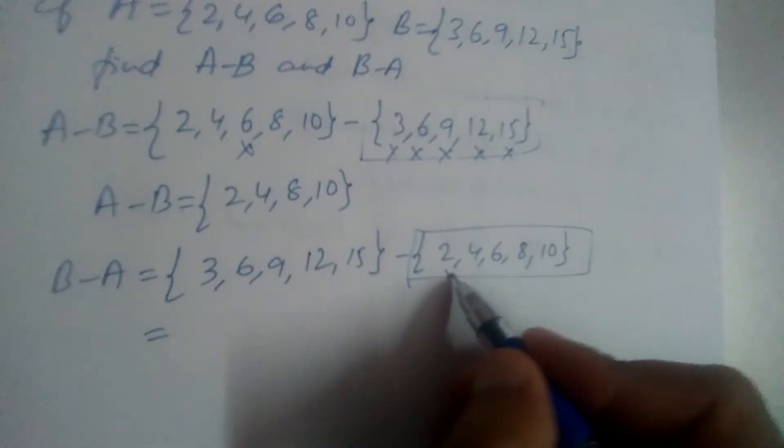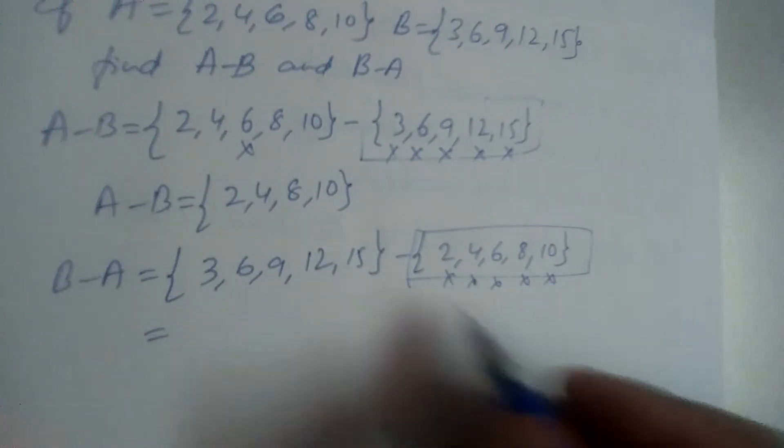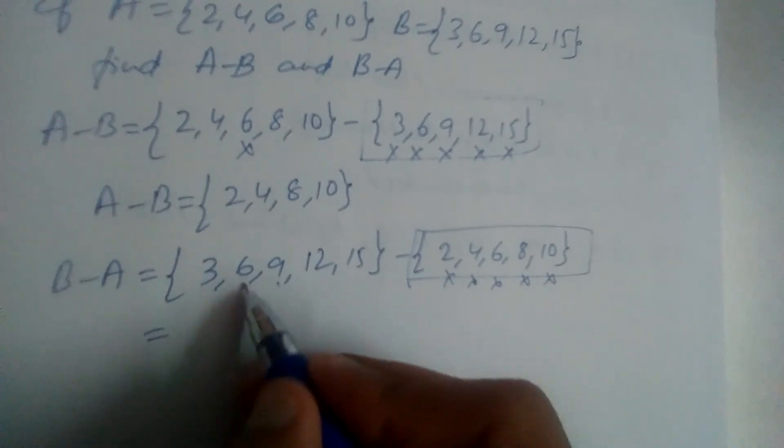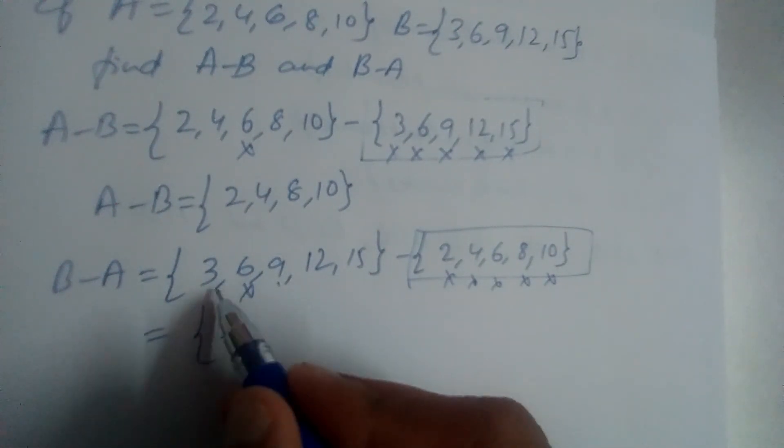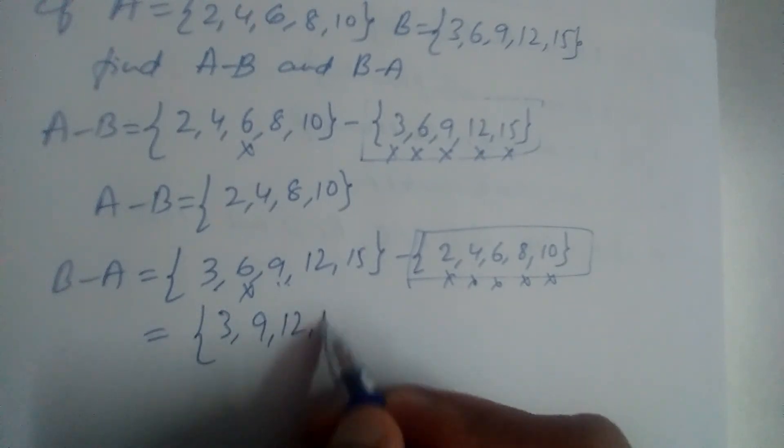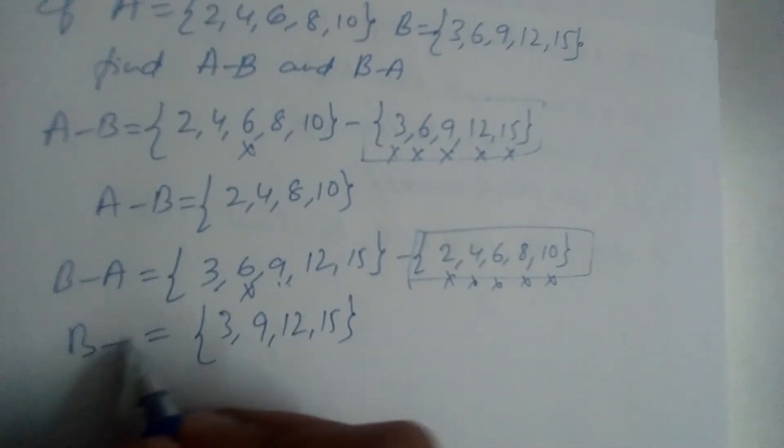2, 4, 6, 8, and 10. So only 6 is common, right? So we should not write 6. What should we write then? 3, 9, 12, and 15. So B minus A is 3, 9, 12, 15.